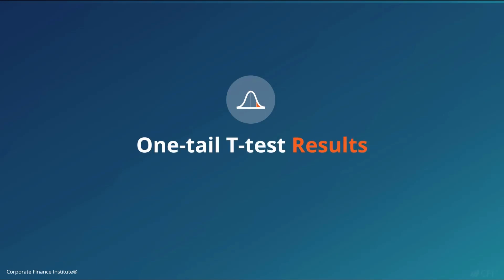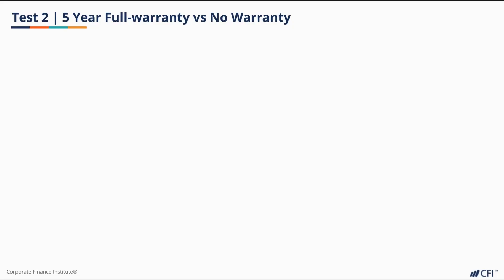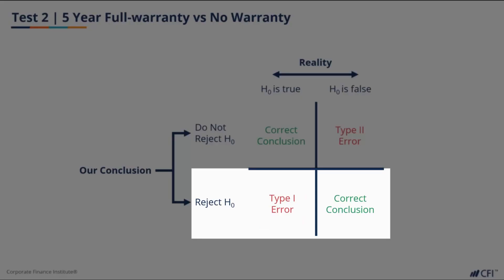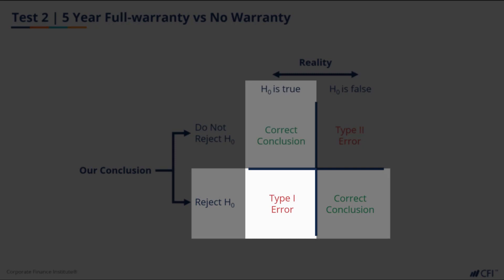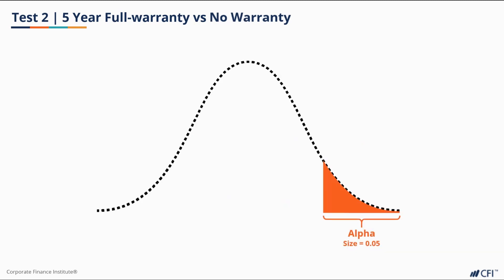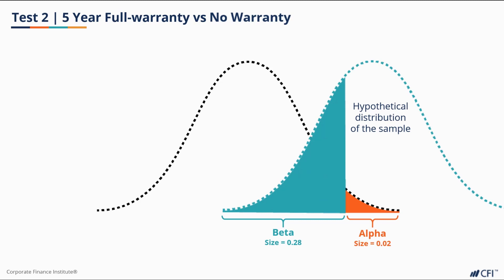In our second test, where we compared a warranty to no warranty, we rejected the null hypothesis. In this scenario, there is a chance of a different type of error occurring, which we call the type 1 error, or a false positive. A type 1 error occurs when we incorrectly reject a true null hypothesis. The odds of a type 1 error occurring are completely dependent on our alpha. The smaller our alpha, the less chance there is of a type 1 error occurring, though this does increase the odds of a type 2 error occurring.